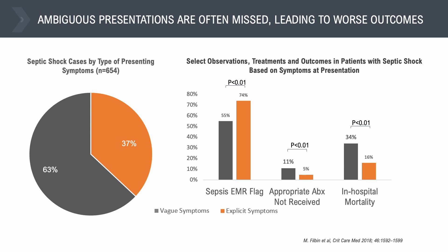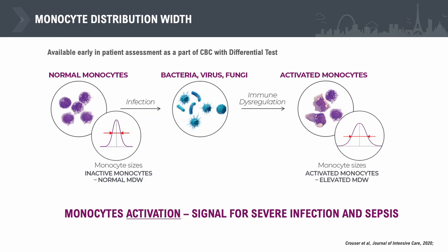This is where monocyte distribution width can help us. Monocytes in their inactivated form exist in fairly similar sizes, and therefore their distribution width is narrow. In the face of a pathogen such as bacteria or viruses, the monocytes are activated, which — depending on the severity of infection — creates a large variability in their volumes. This causes an increase in their distribution width, and MDW goes up.